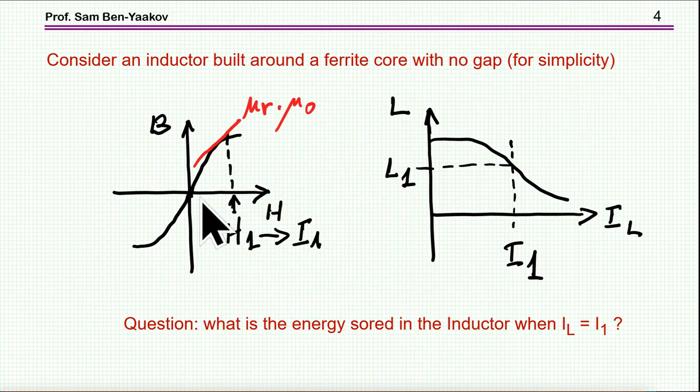So, here I'm showing a BH curve of a ferrite material on which an inductor is built. This is the core, and this is the BH of the core, which is non-linear. That is, we have here a sort of saturation region, and we have a curvature here.